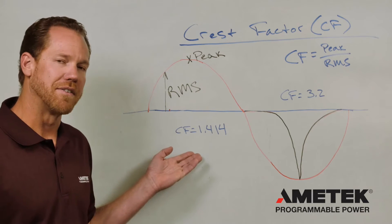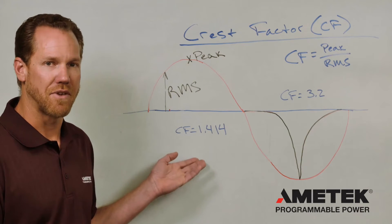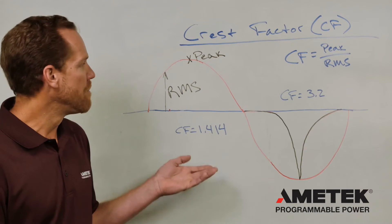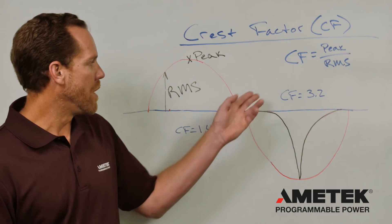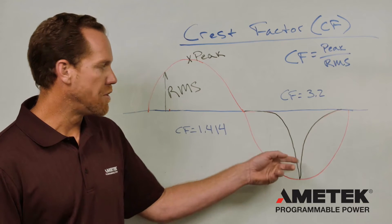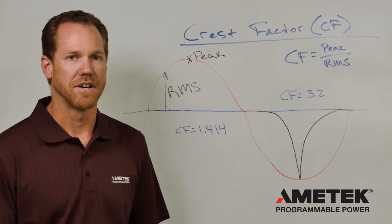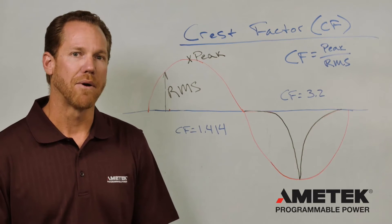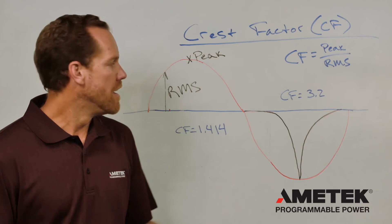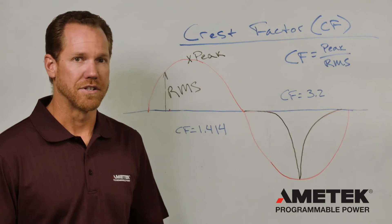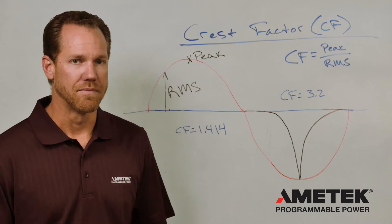A perfect sine wave has a crest factor of 1.414. A waveform like this, where you might have a peakier waveform — such as a rectified power supply — you get a higher crest factor, such as 3.2.